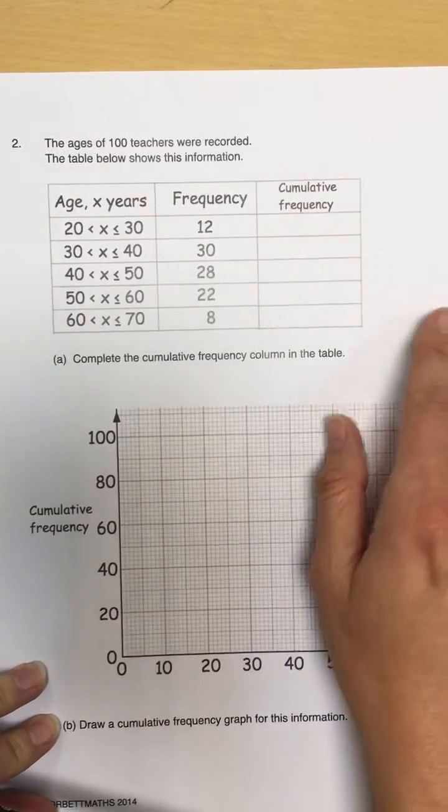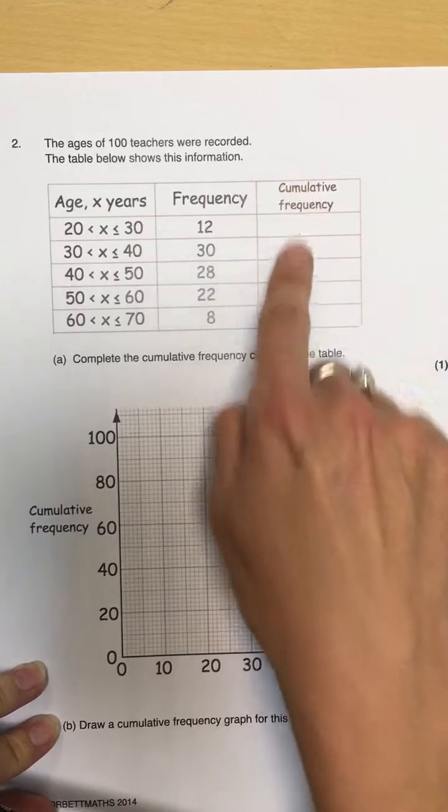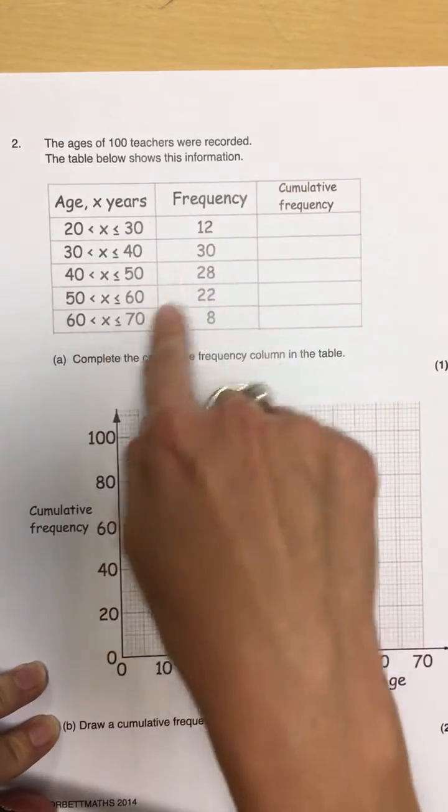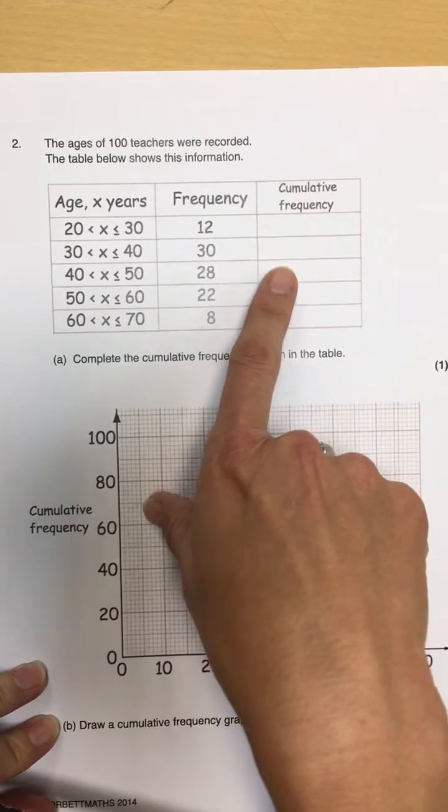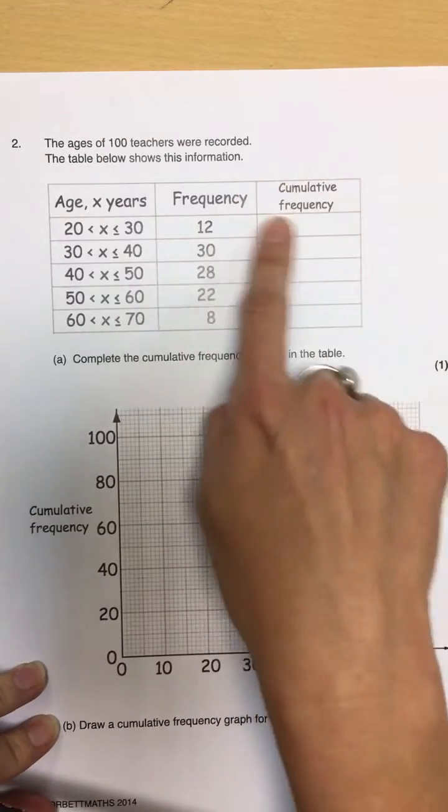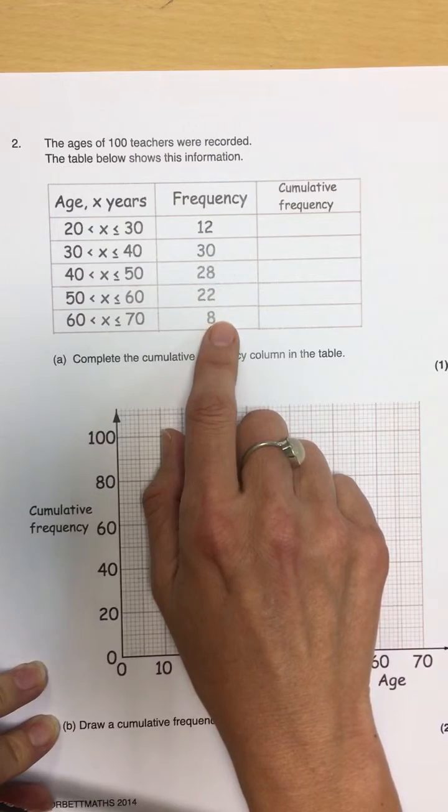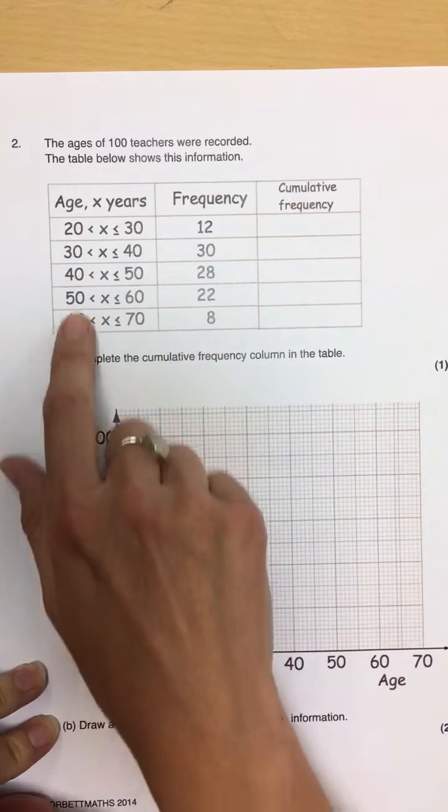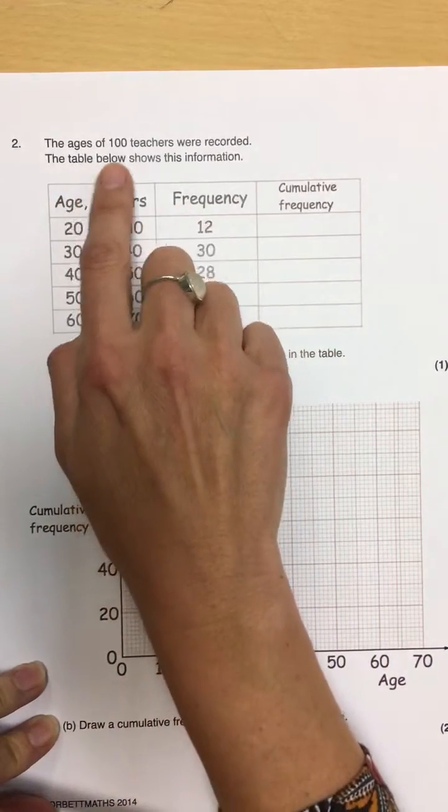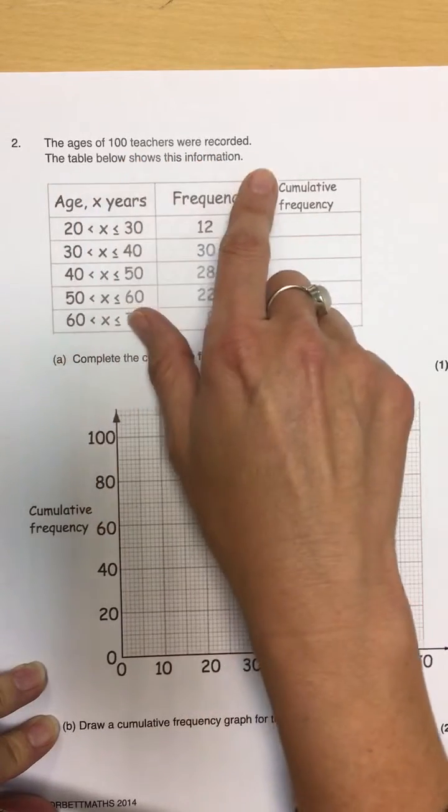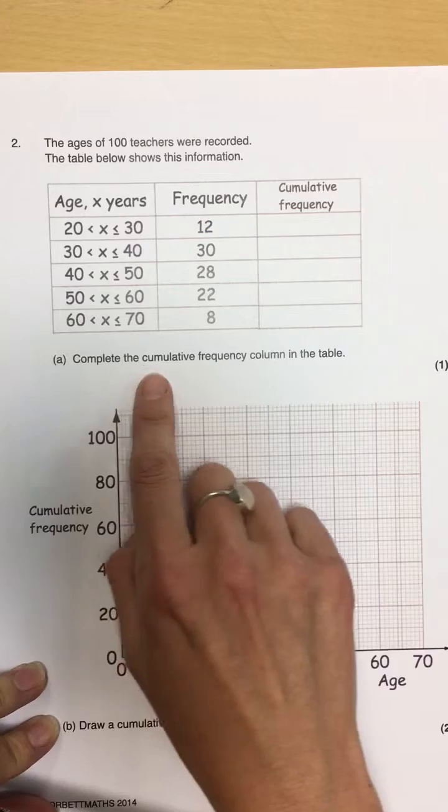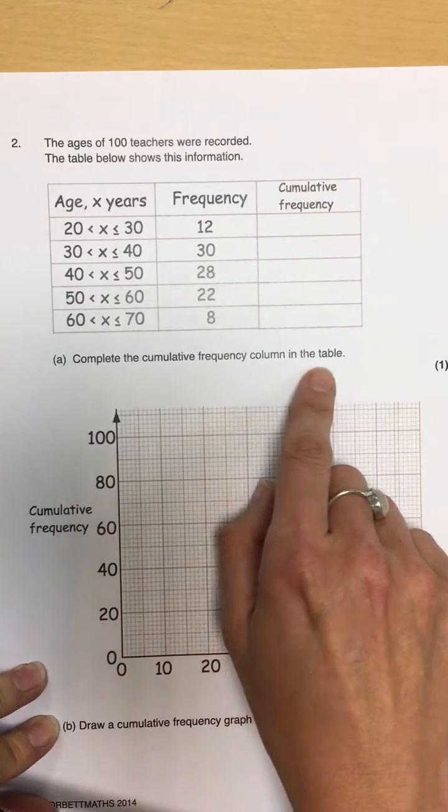And if you are lucky, you will get an extra column added to your grouped frequency table to prompt you to do something. If not, you need to remember to add a column on to your grouped frequency. Now, the first thing we're going to do is we're going to look at this question. It says the age of 100 teachers were recorded. The table below shows this information.